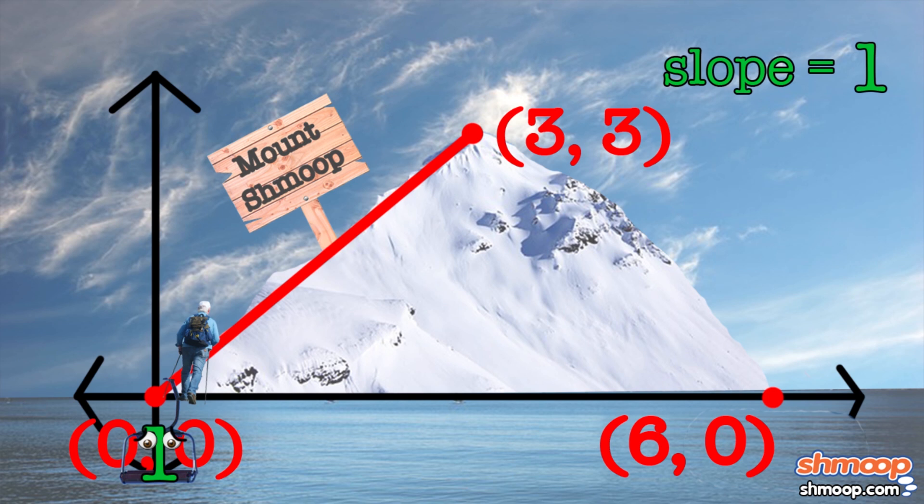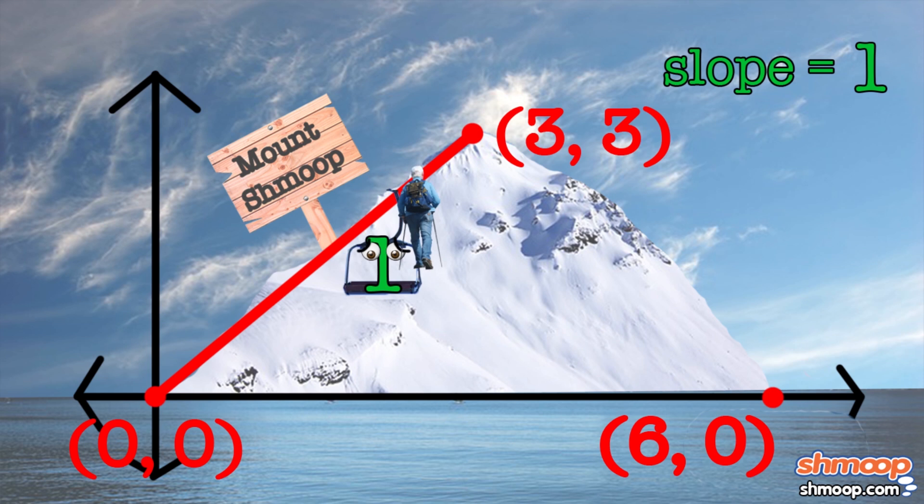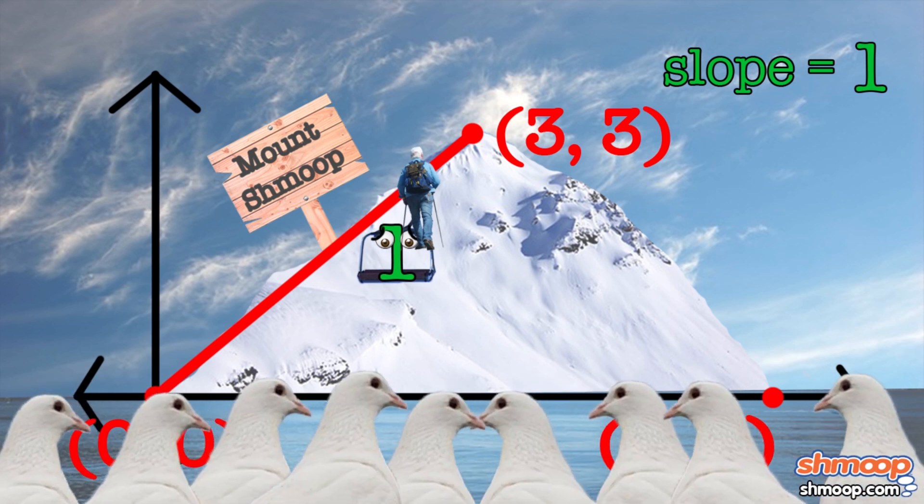That is, for each rock we move east this way, as we climb Mount Shmoop, we also rise one rock toward the sun. The slope of 1. Pretty good trick, huh?